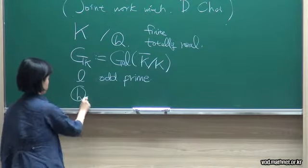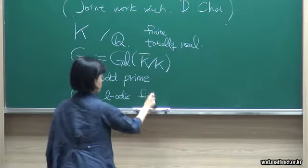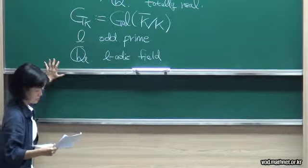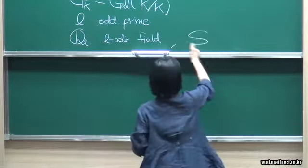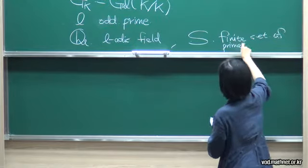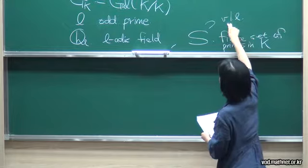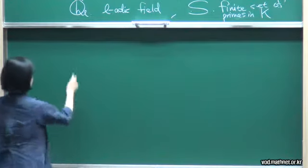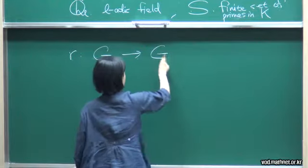And I put Q_L to be the L-adic field, a completion of Q with respect to the L-adic norm. And one more notation: I like to select some finite number of places, so that's your finite set of primes in k. And I want it to contain all of the places over L and also all the infinite places.